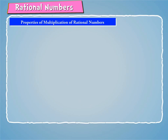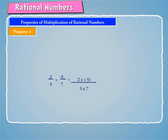Some of the properties of multiplication of rational numbers are as follows. Property 1: Let us consider the following examples. 2/3 into minus 5/7 is equal to 2 into minus 5 by 3 into 7, which is equal to minus 10/21, which is a rational number.